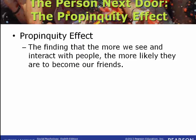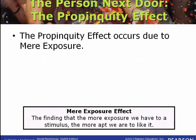We start by talking about attraction because relationships typically start here. There is something — whether it be a physical attraction or something else about a person — that draws you in and makes you want to create a relationship with that person. Before we can talk about close relationships, we have to talk about how we choose the people that we want to have relationships with. One determinant of interpersonal attraction is proximity, or propinquity.